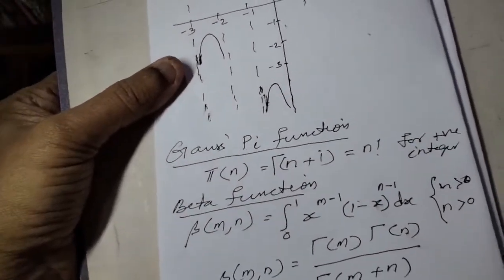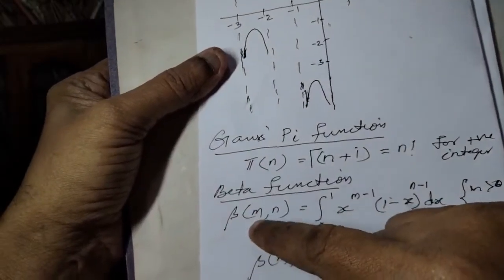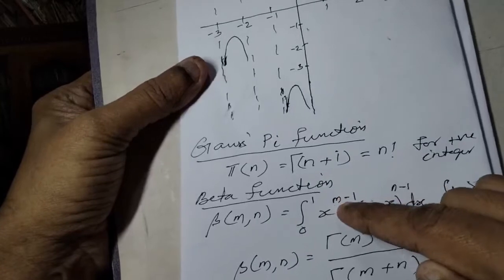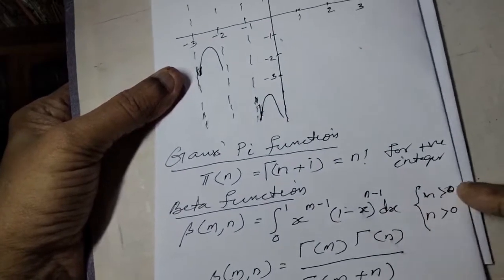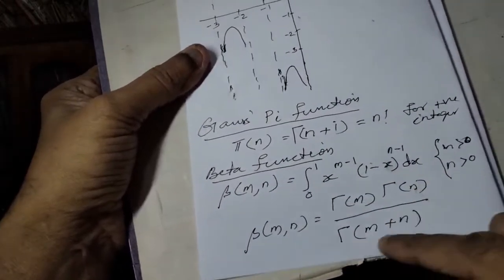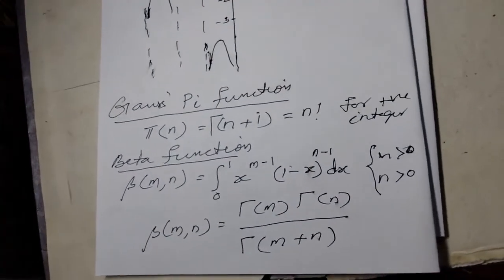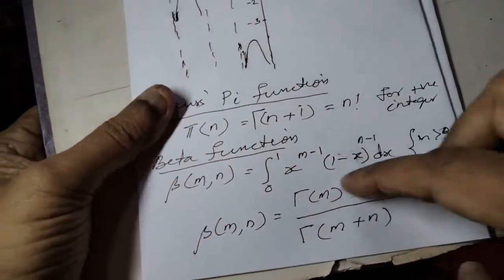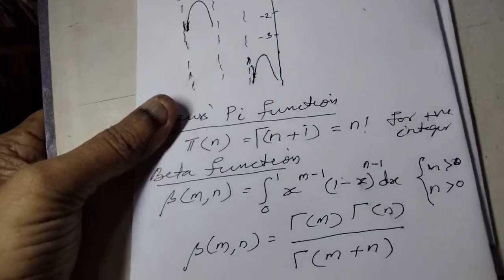In the beta function, beta(m, n) is defined as the integral from 0 to 1 of x raised to m minus 1 times (1 minus x) raised to n minus 1, dx, for m greater than 0 and n greater than 0. The beta function and gamma function are connected by the relation: beta(m, n) equals gamma(m) times gamma(n) divided by gamma(m plus n). This result is very useful for evaluating definite integrals.